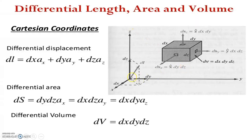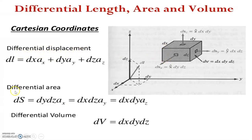You must know the differential displacement, differential area, and differential volume. To calculate the volume, it is simply length times width times height: dx dy dz. Volume is a scalar quantity. Area and differential displacement are vector quantities, so we must mention the direction. You must understand differential displacement, differential area, and differential volume in the Cartesian coordinate system. This is very important to calculate the electric field using Gauss's law and also very important in Ampere's law.